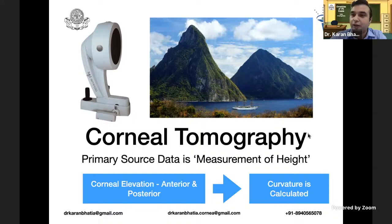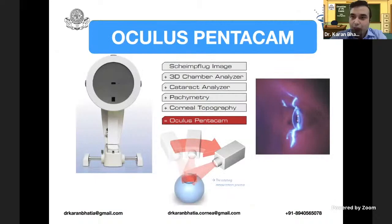What does the Pentacam include? Penta means five. It includes a Scheimpflug image, a 3D chamber analyzer, a cataract analyzer, pachymetry, and corneal topography.